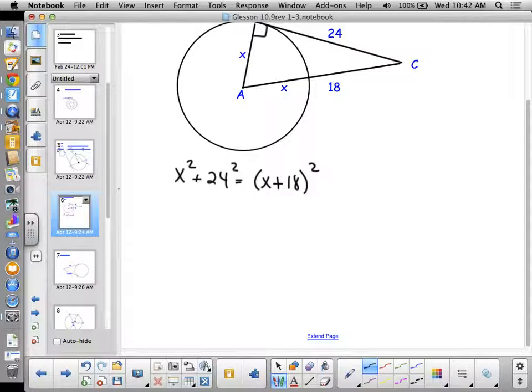Oh, not quite as easy as what we've gotten used to with our Pythagorean theorem. Now, in the homework last night, a lot of you made mistakes with this. You distributed the exponent over the sum instead of foiling. So this is X squared plus 576, but I have to foil that out. That's X squared plus 36X plus 18 times 18 is 324, I think. Yes. Somebody check that on me. 324. Okay.